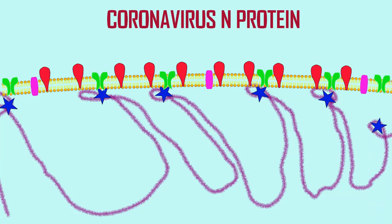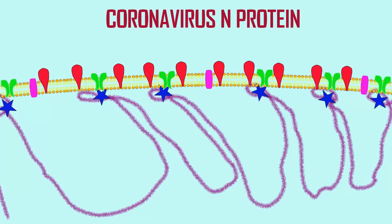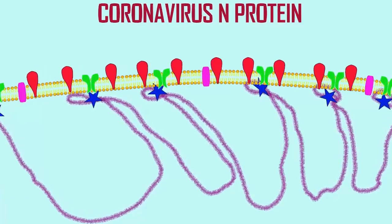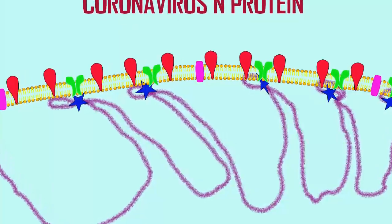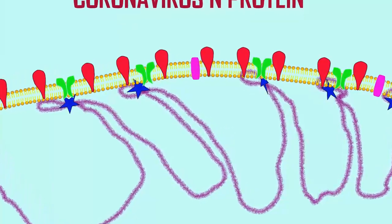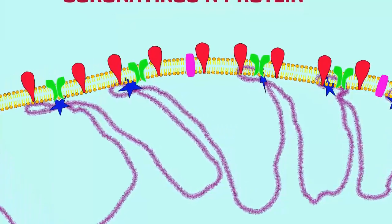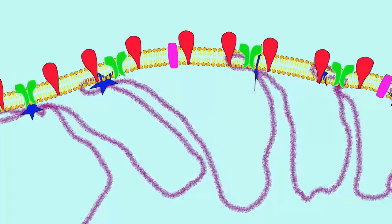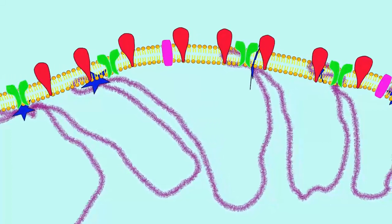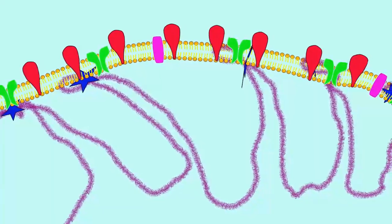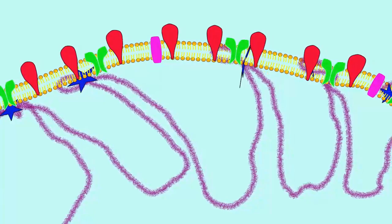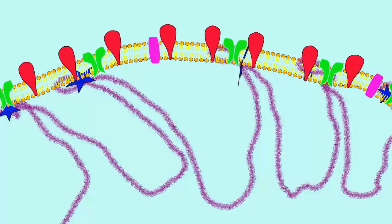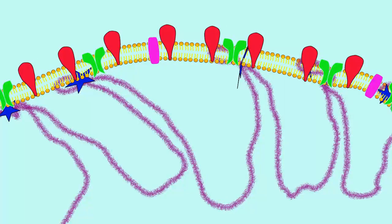It is the association of the N protein with the RNA, and then with the M protein, which organizes the RNA genome inside the envelope of coronavirus.